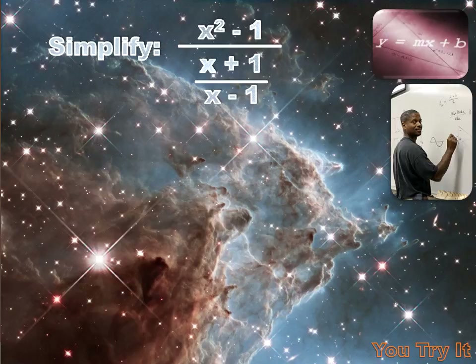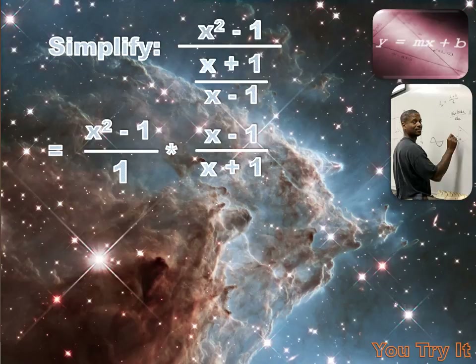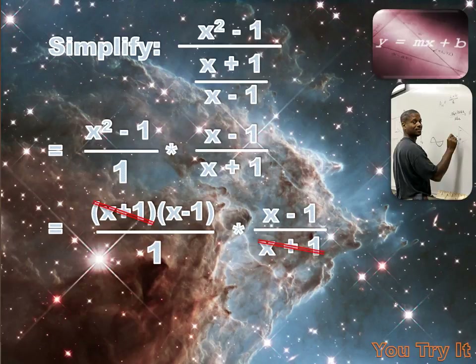In order to simplify this, I need to carry out the division, and to do that I need to remember the multiplicative inverse. Instead of dividing x squared minus 1 by x plus 1 over x minus 1, I'm going to multiply x squared minus 1 times the reciprocal of that fraction. So I have x squared minus 1 over 1, times x minus 1 over x plus 1. Factoring x squared minus 1 gives x plus 1 times x minus 1 over 1. I have x plus 1 in both numerator and denominator, so those cancel, and I'm left with x minus 1 times x minus 1 over 1 — which is just x minus 1 squared.